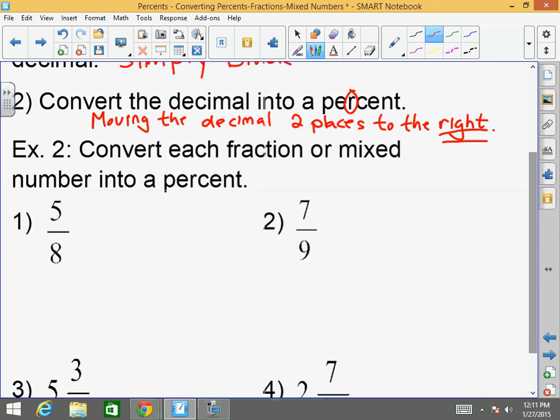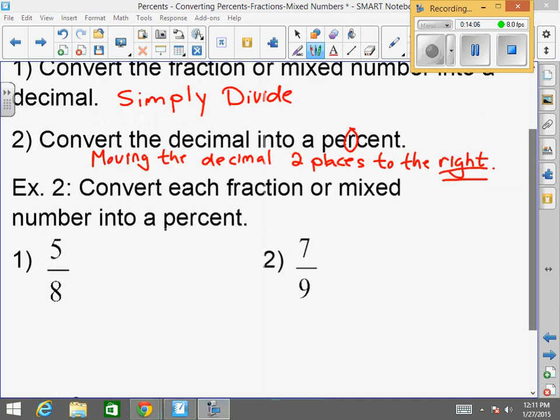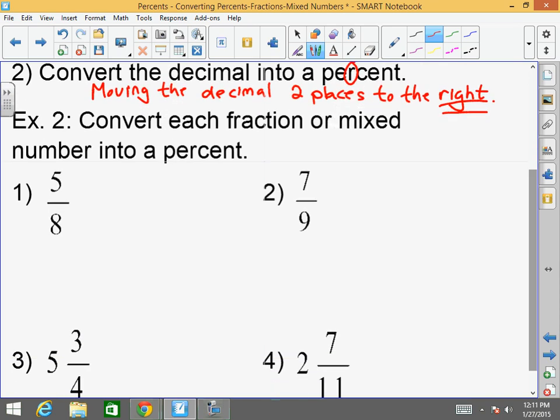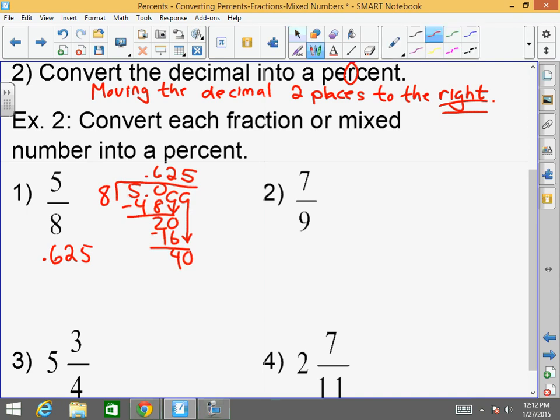Convert each fraction or mixed number into a percent. Five-eighths. I hope that you remembered the fraction conversions that I told you to memorize. Five-eighths equals 0.625. If you didn't memorize that, not a big deal, just divide. Eight goes into 5.0. Eight goes into 5 six times, which is 48. Eight goes into 22 two times, which is 16. Eight goes into 4 five times. So five-eighths becomes 0.625. And now I want to convert this decimal into a percent. So I literally move the decimal 1, 2 places to the right. So that is 62.5 percent.